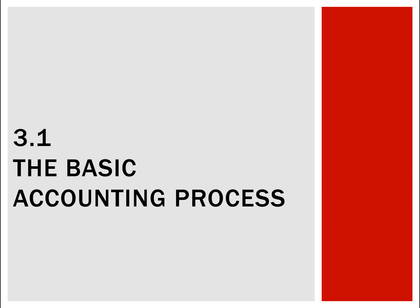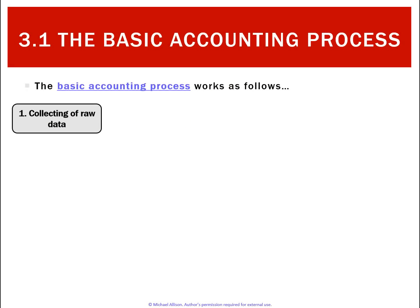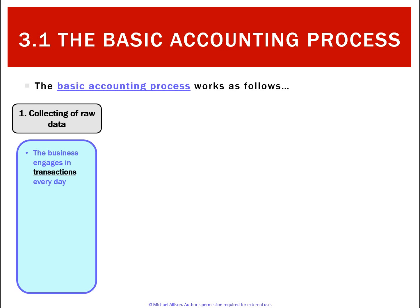We'll start chapter 3 with a look at the basic accounting process. We'll add steps to this as we go during the semester, but for now we'll say accounting is a very simple process that starts with collecting raw data. That involves the business engaging in transactions every day, and every transaction must have a source document. We use those source documents as evidence that all the transactions we're reporting have actually occurred — something we learned when we spoke about reliability.